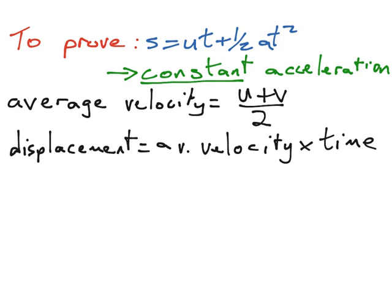Instead of writing all the words, we're going to start to substitute in letters to shorten things down. Our average velocity we found earlier was u plus v divided by 2. Again, u is your starting velocity and v is your final velocity.